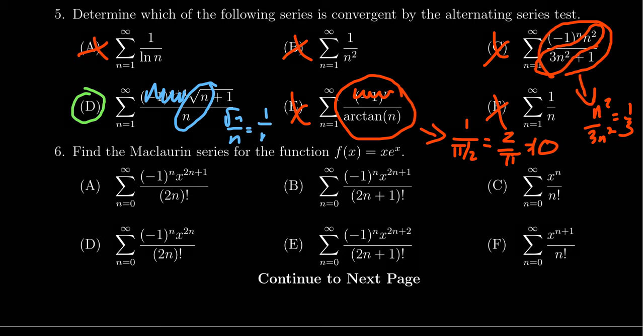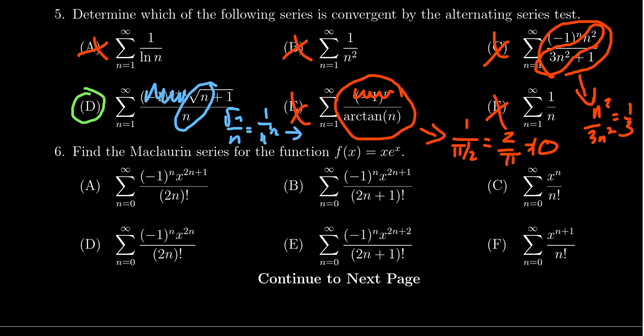And so as n goes to infinity, you get 1 over infinity, which will look like zero. So this is a decreasing sequence which approaches zero. That's an alternating series. Therefore, it will be convergent by the alternating series test.